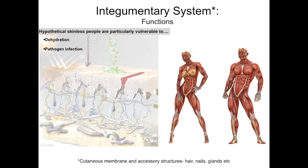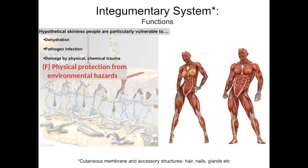Skin also provides protection against physical abuse, protecting underlying soft tissue from abrasion, bumping, scrapes, and cuts that would damage delicate blood vessels and nerves underneath. It also provides protection against chemical trauma — think of getting soap in your eyes or breathing in a harsh chemical that burns the inside of your nose. These three constitute physical protection from environmental hazards, which is probably the main function of your skin.